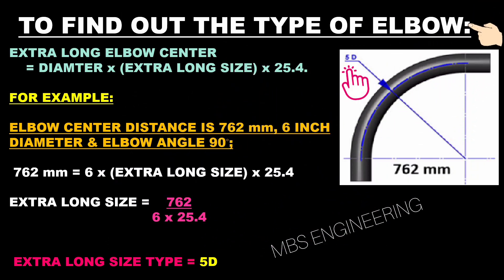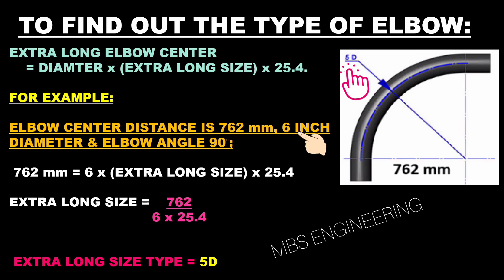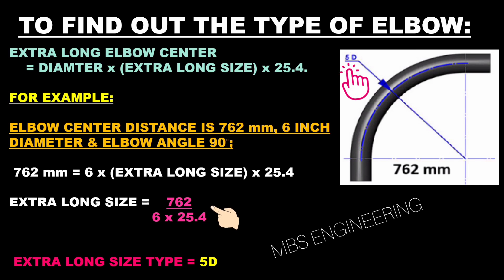Next, we learn how to find the type of elbow given a known center distance. The formula is: Extra Long Elbow Center = D × Extra Long Size × 25.4. Given: elbow center distance = 762 mm, diameter = 6 inches, elbow angle = 90 degrees. Applying the data: 762 = 6 × Extra Long Size × 25.4. Therefore, Extra Long Size = 762 ÷ (6 × 25.4) = 5D.